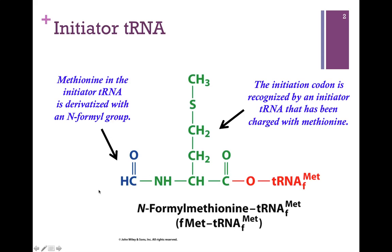So again, the initiator tRNA in prokaryotic systems is a tRNA carrying N-formylmethionine. As we'll see a little bit later, oftentimes proteins are modified after translation, so this first amino acid might not be present in the final product. However, the first amino acid added in the nascent or initial chain is always methionine in eukaryotic systems, and N-formylmethionine in prokaryotic systems.